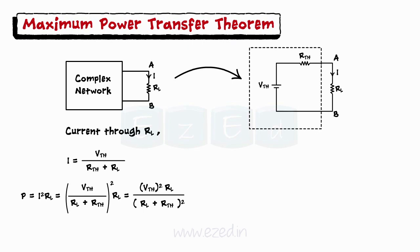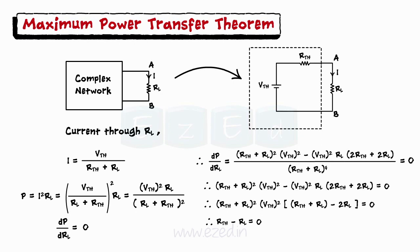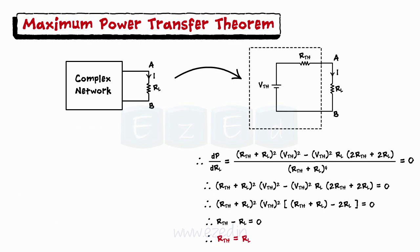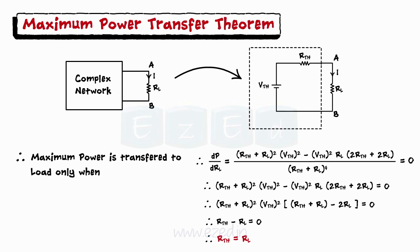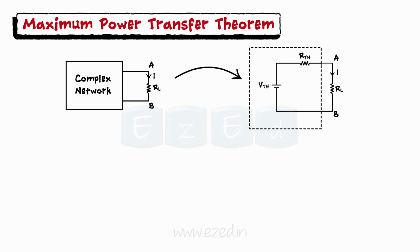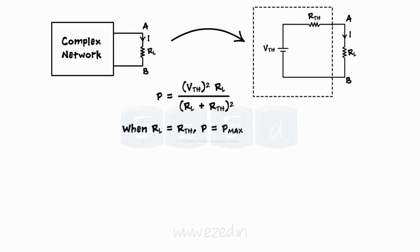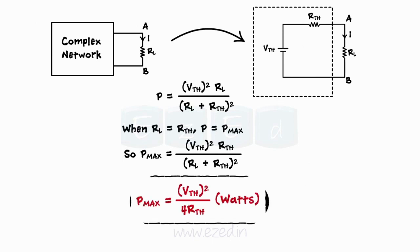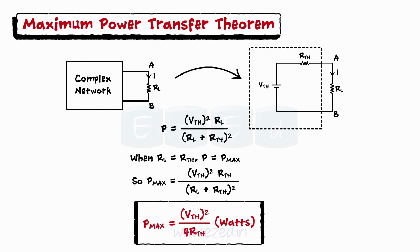To find the value of RL at which maximum power is delivered, we differentiate the power equation with respect to RL and equate the result to zero. Differentiating power P with respect to RL, we get the condition Rth equals RL. Thus, it is proved that maximum power is delivered to the load only when load resistance equals the equivalent resistance of the network. Maximum power is given by Pmax equals Vth squared upon 4 times Rth.